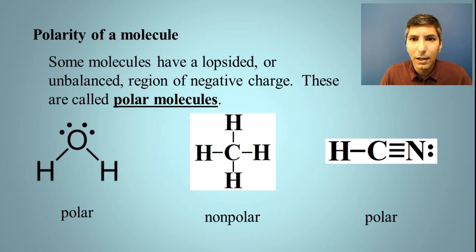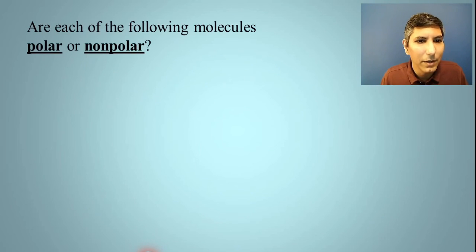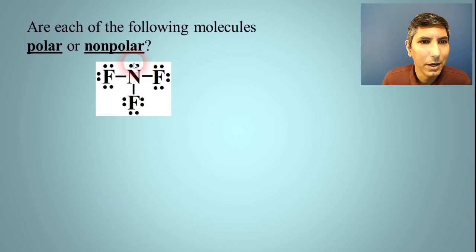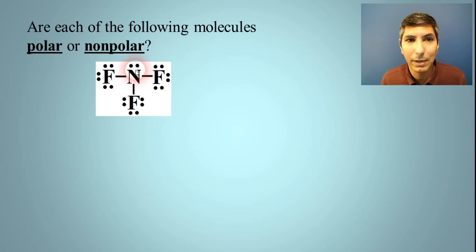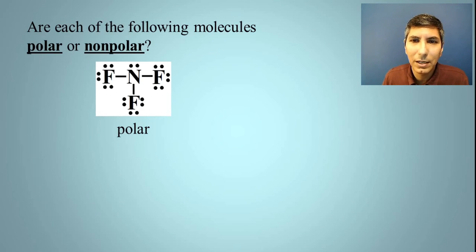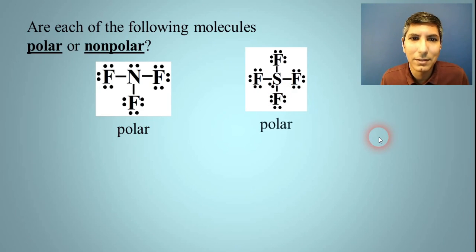Let's look at some examples to determine polar vs. non-polar. Nitrogen trifluoride (NF₃): there's an unshared pair — a lone pair — on the nitrogen not balanced by anything else, so it is polar. A helpful hint: anytime you see exactly one lone pair of electrons on a central atom, it's going to be a polar molecule. Similarly, the molecule shown with one unshared pair on the sulfur is also polar — that lopsidedness gives it away.